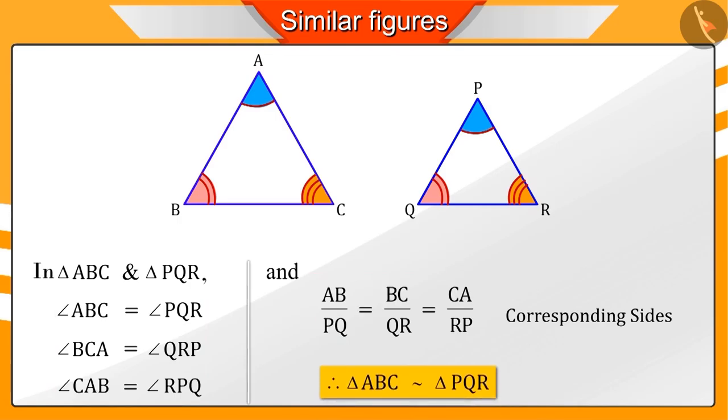Hence, these two triangles will be similar. We represent the similarity between two polygons by this symbol.